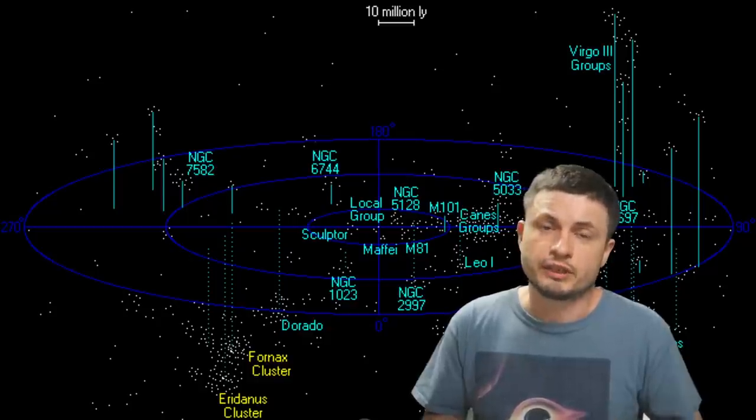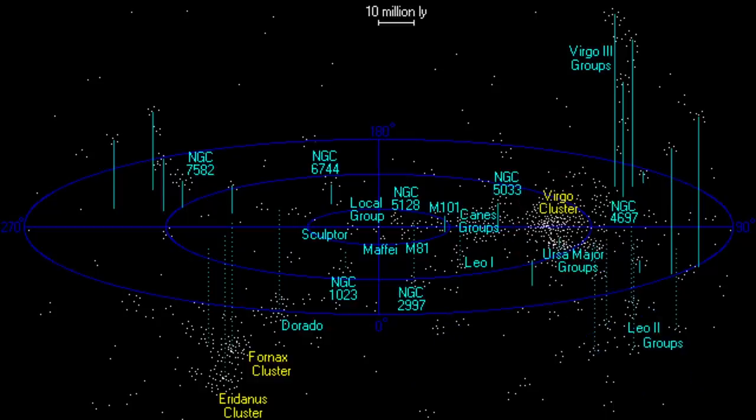we'll find ourselves in what's known as the Virgo supercluster. And this is of course a collection of various galactic groups, all connected together, and all more or less moving into the same direction.